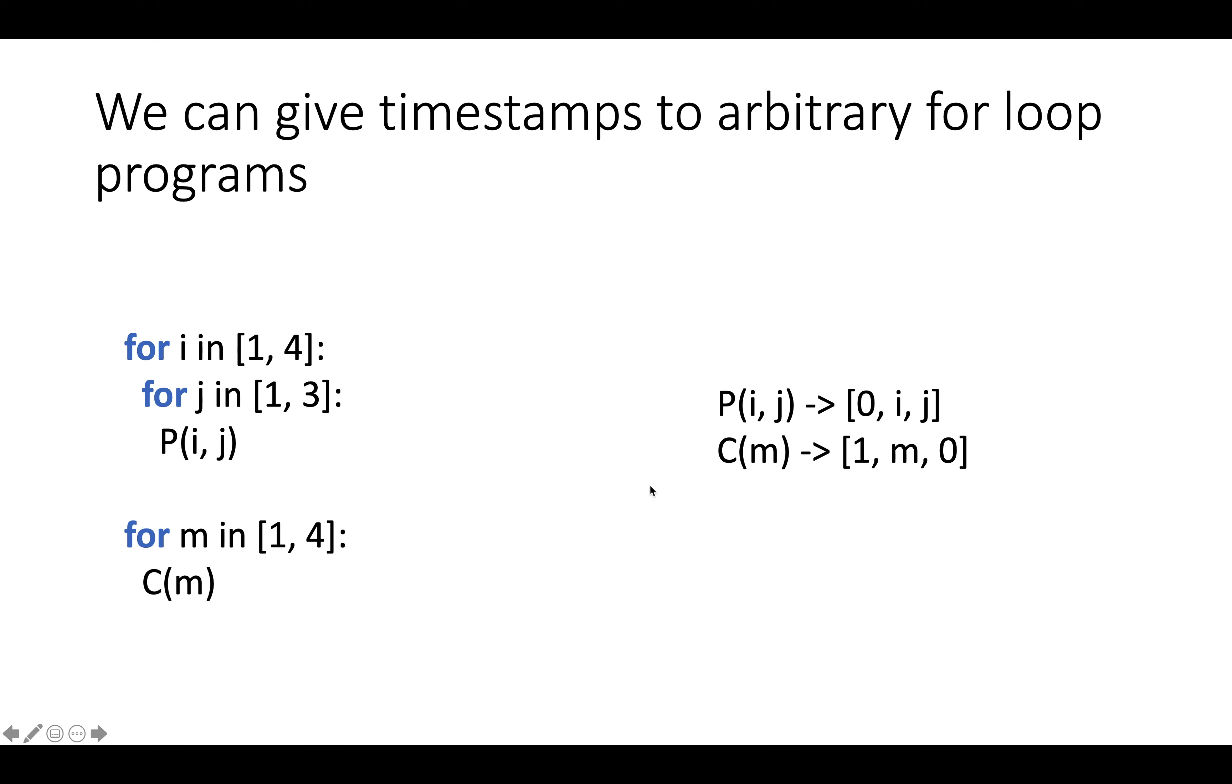And you can actually think of this as basically representing the program as having a larger outer loop with two iterations and an if statement that guards that saying, if we're at outer iteration 0, do this loop nest, if we're at outer iteration 1, do this loop nest.